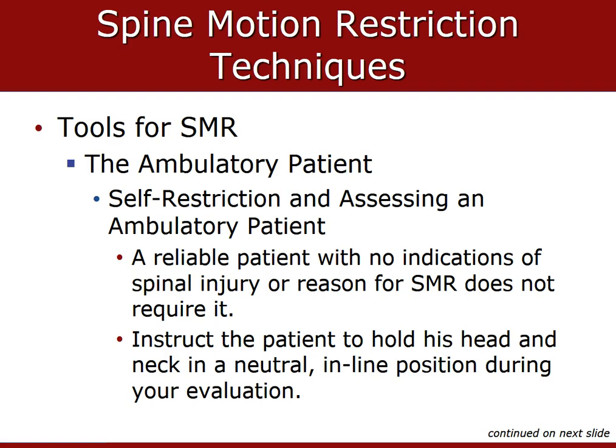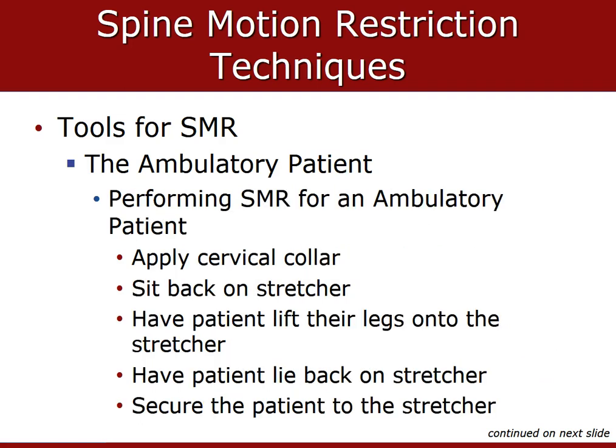The patient should be instructed to relax and allowed to freely move if they meet the following criteria: patient is reliable, GCS of 15, no distracting injuries, can communicate, no intoxication or drugs, and you can clear the spine. Have the patient sit back on the stretcher, lift their legs onto the stretcher, lie back, and secure the patient to the stretcher. These patients do not need to be strapped to a board. Make sure you explain to them to remain in a supine position and constantly maintain self-restriction until instructed otherwise at the hospital.